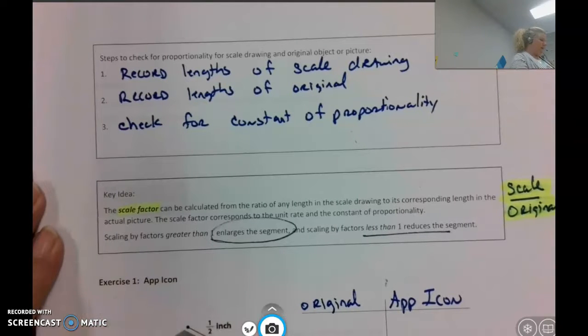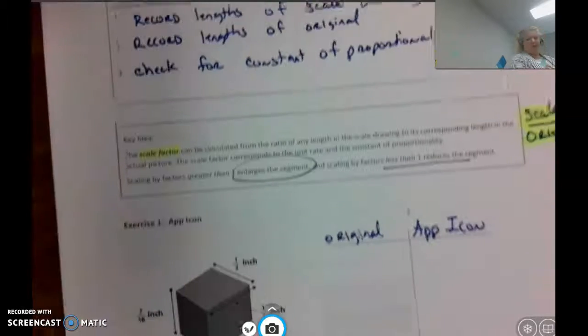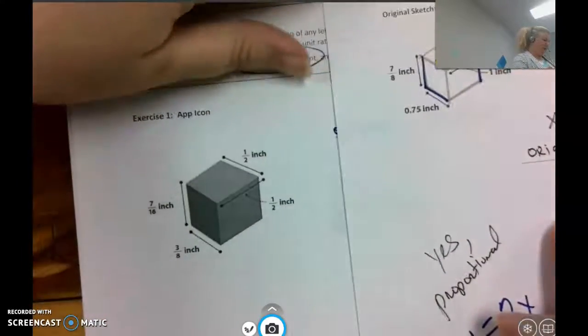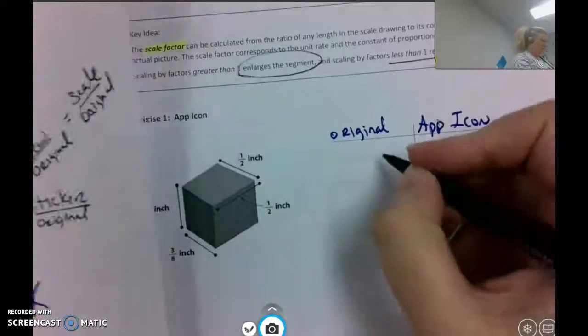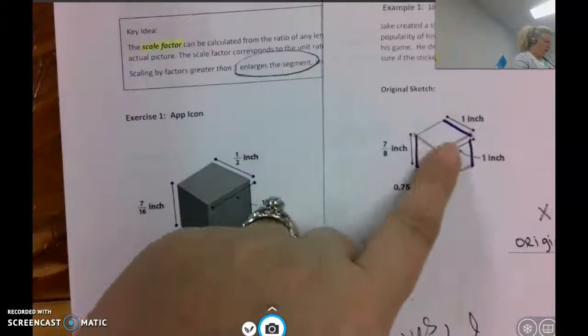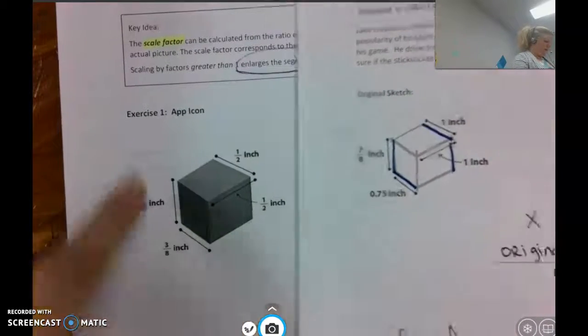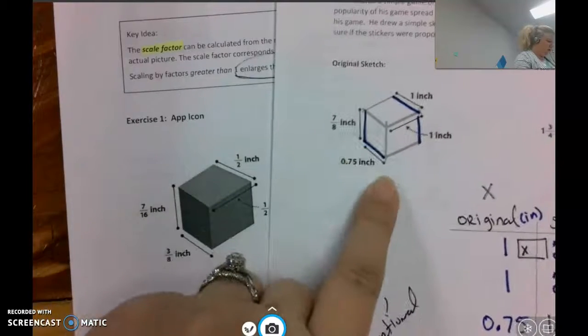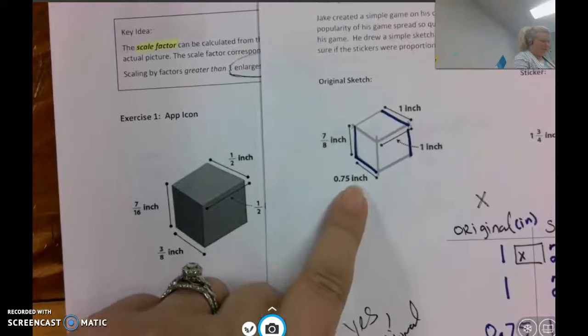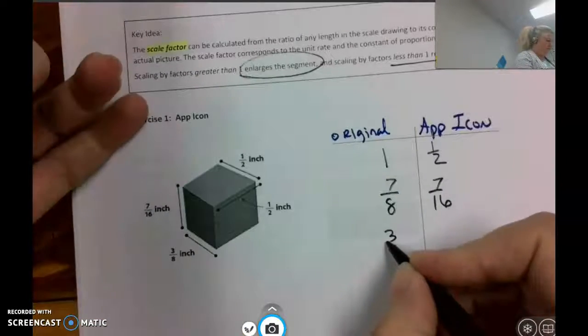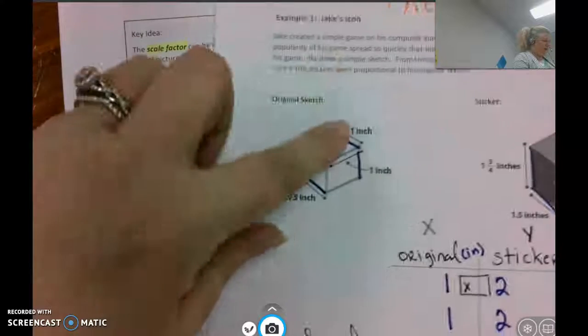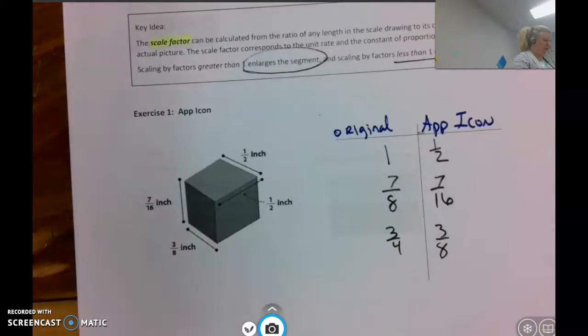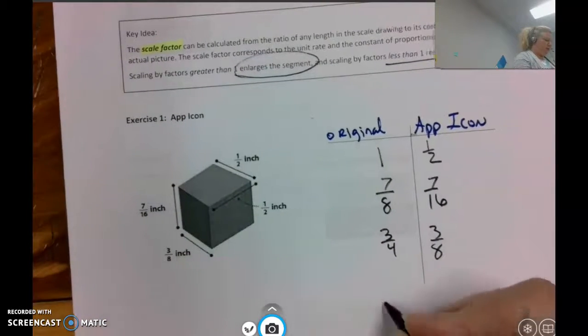Here we have an app icon that would also be used with the situation we started with. I'm going to take my original measurements from here. We have the 1 inch goes with the half an inch on the icon, and then 7 eighths of an inch goes with 7 sixteenths. We could write that as a fraction too, and just do 3 fourths and 3 eighths. These are already recorded. So now we're looking for the scale factor.